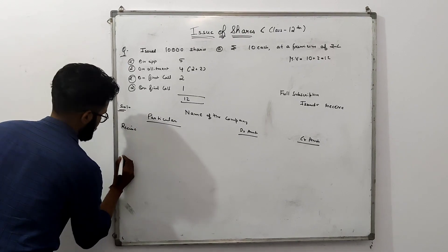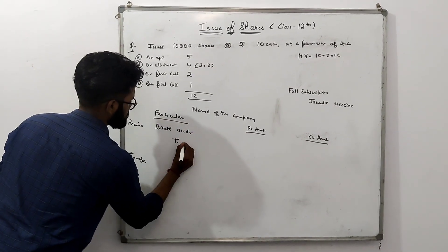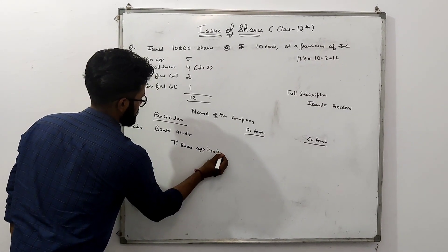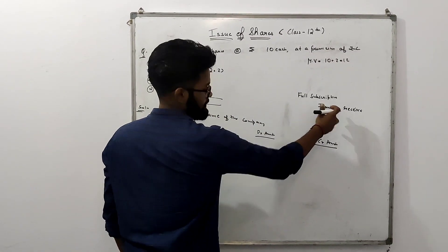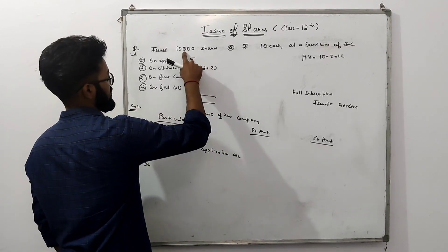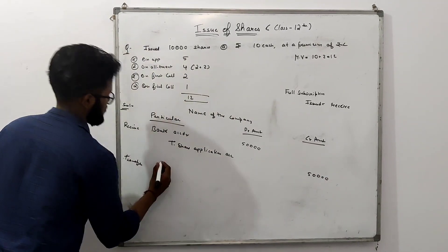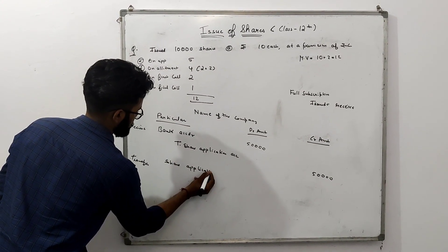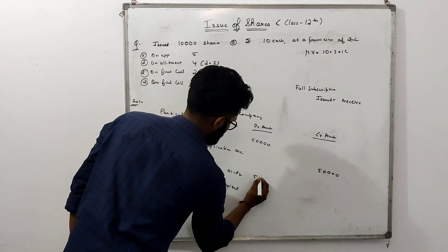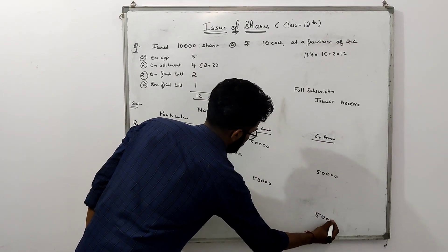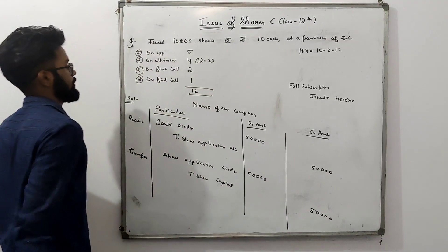The first entries are the application entries — two entries for application. First, Bank Account Debit to Share Application Account: the amount received is 10,000 into 5 equals Rs. 50,000. Then we transfer — Share Application Account Debit to Share Capital: Rs. 50,000 on both sides. That completes the first set of application entries.